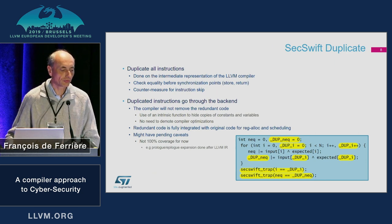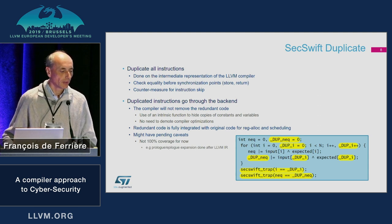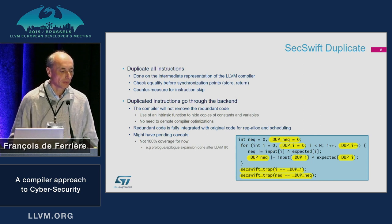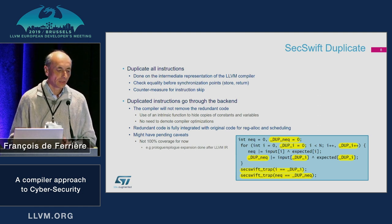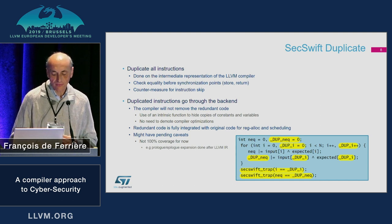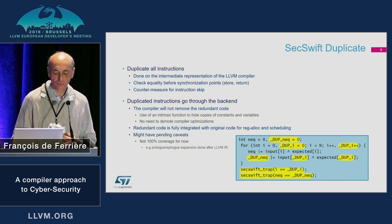The first point is the duplication of instructions. This is implemented at the intermediate representation of the LLVM compiler — in the middle end. We duplicate instructions and add some verifications at synchronization points. The objective of this countermeasure is to detect a skip of an instruction. Since we do this duplication inside the compiler, the compiler will not remove the duplicated instructions.